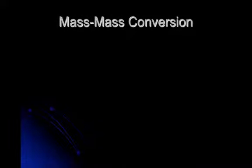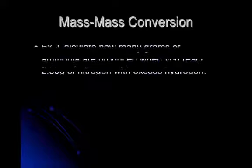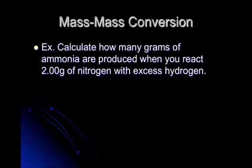All right guys, welcome back. We are going to talk a little bit more about different types of conversions that you can do with stoichiometry. The last one we want to discuss is what's called the mass-to-mass conversion. That is, we start off with grams of a reactant and then convert to grams of a product. So what I want to do is a couple of practice problems with this.